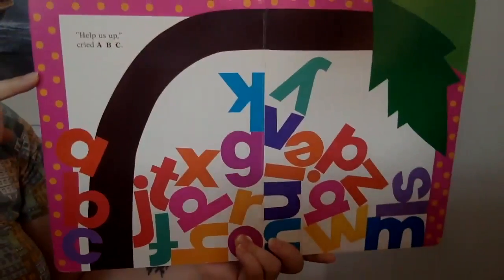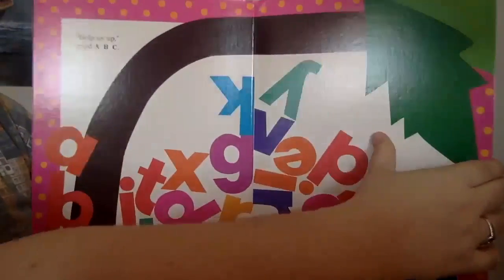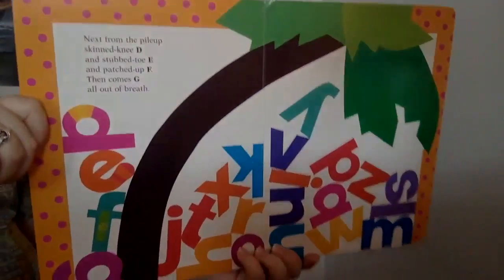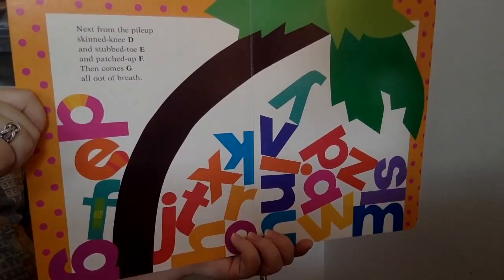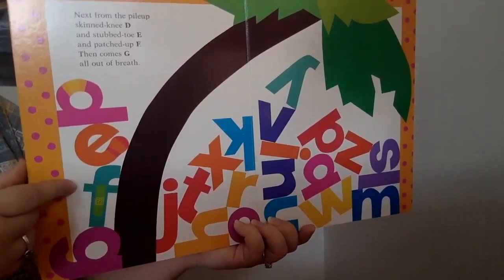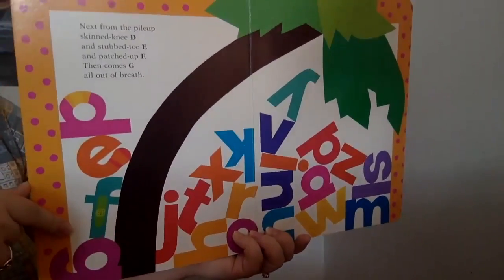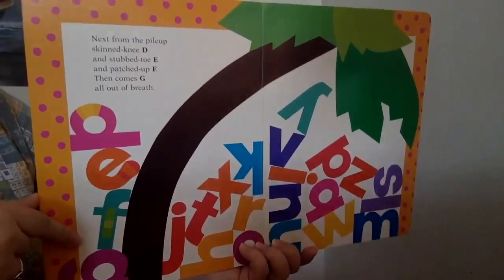Help us up, cried A-B-C. Next from the pile-up, Skinned-knee D, Stubbed-toe E, Patched-up F. Then comes G, all out of breath.